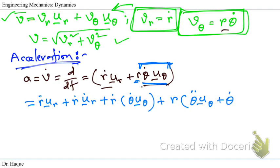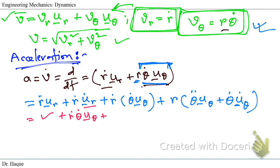We also have θ-dot times the derivative of u_θ. Now, from when we were deriving velocity, we did have the value of u_r-dot. If we plug that value here, we keep this part the same and we get r-dot times u_r replaced by θ-dot times u_θ. This part remains the same. For the remaining part, we need to determine what u_θ-dot would be.